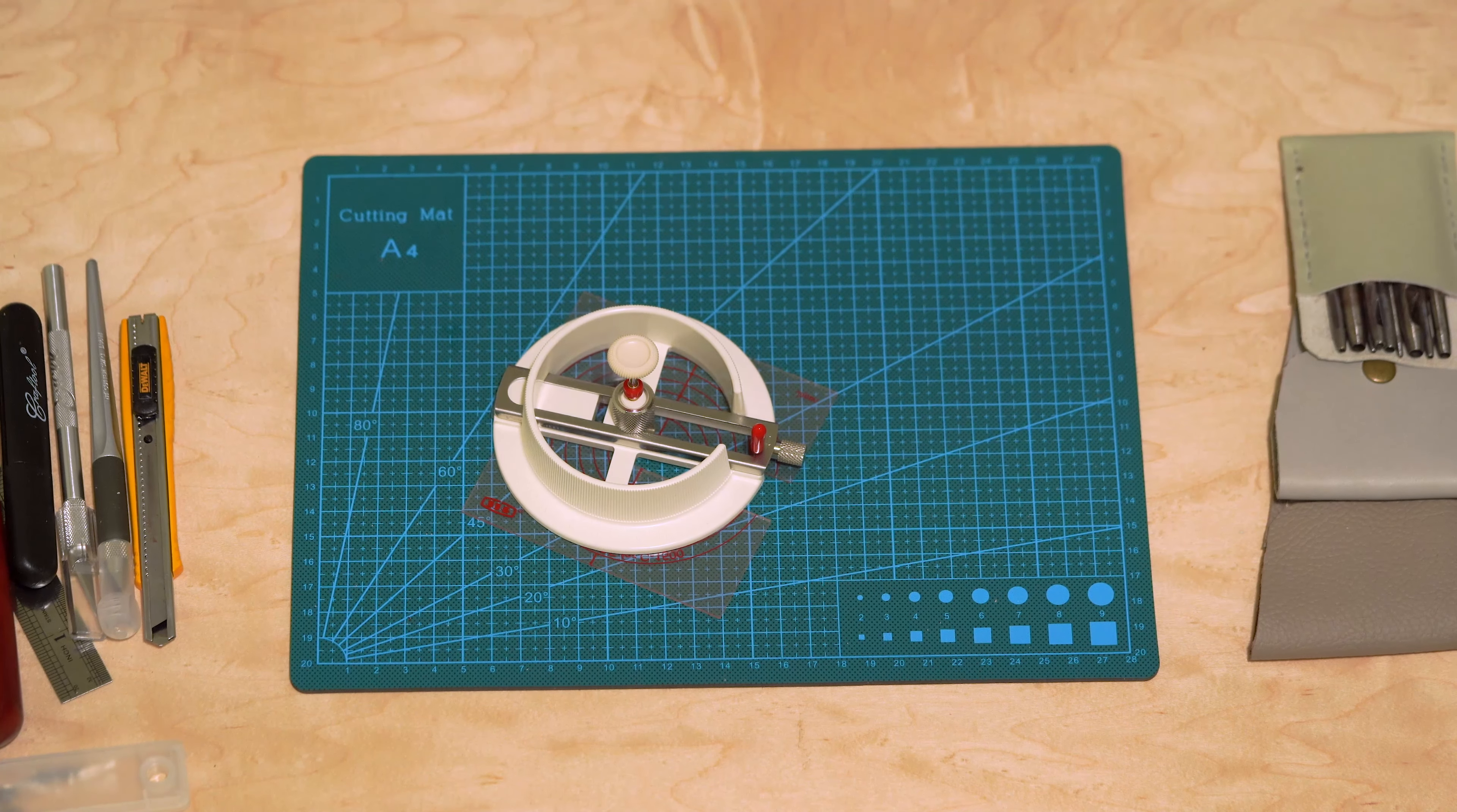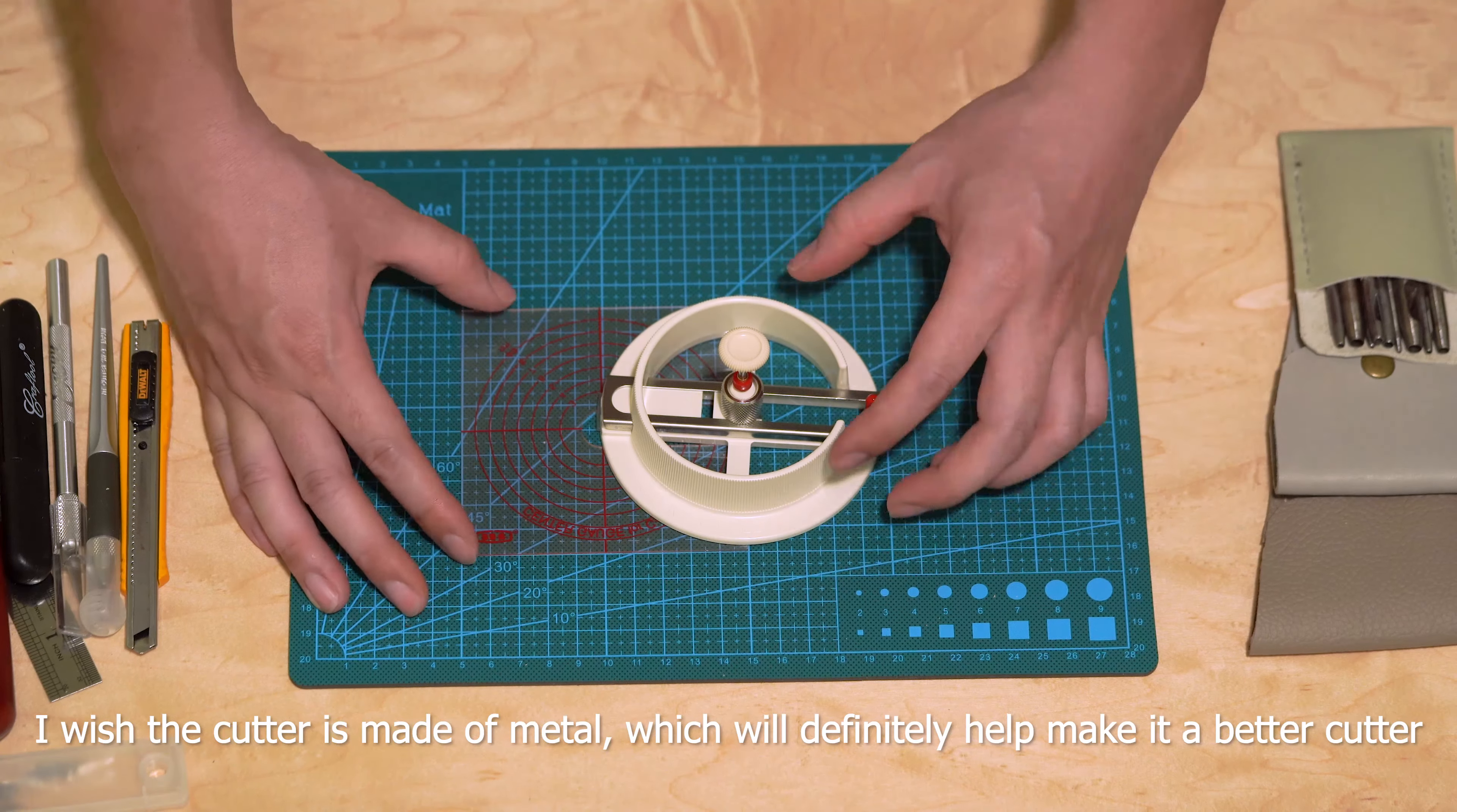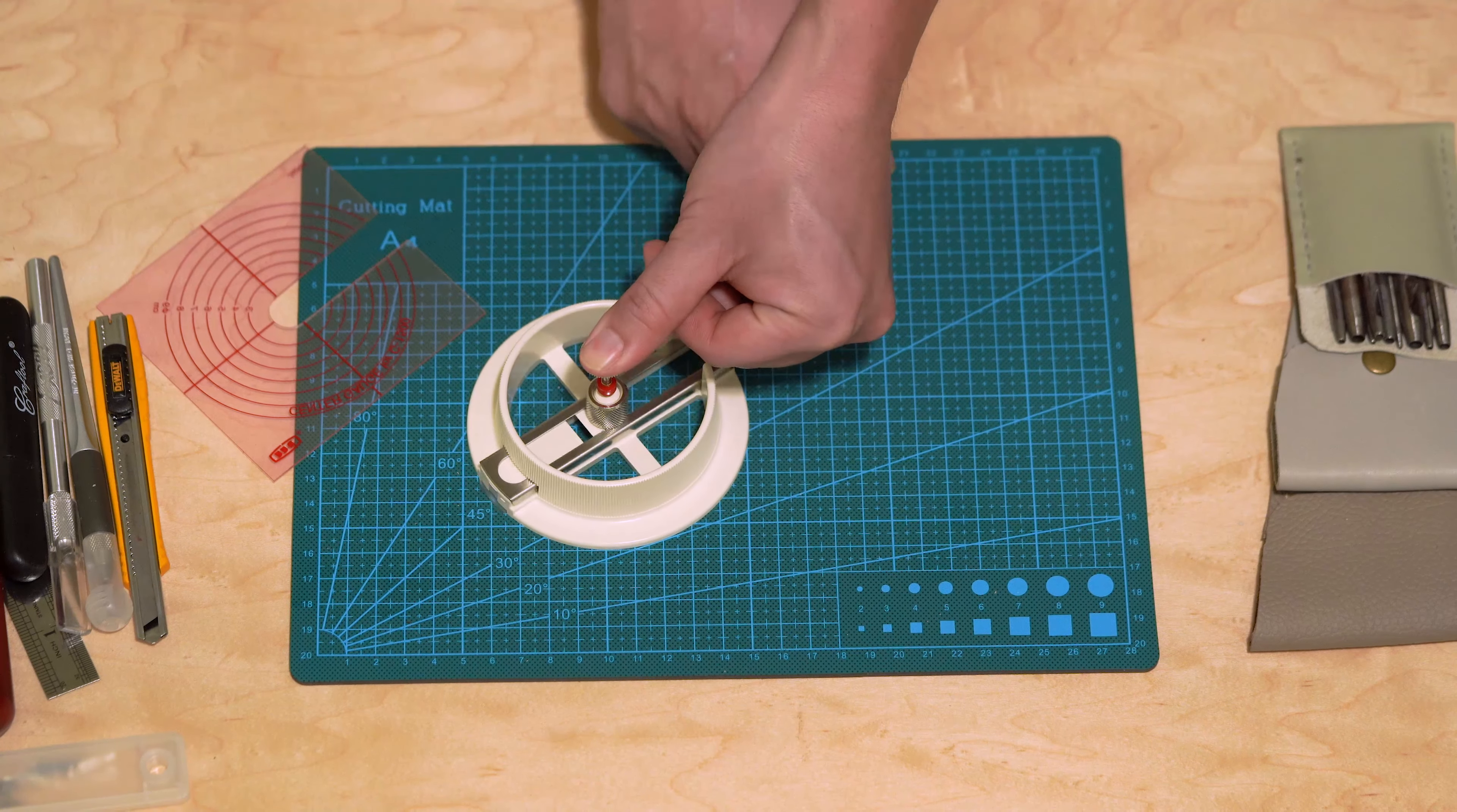So this is the guide. Basically you put the guide down there and then you kind of align on where you want to cut the circle, and then basically you just slide this thing in here and then it will be fixed into place. Then you press down on the knob in the center.